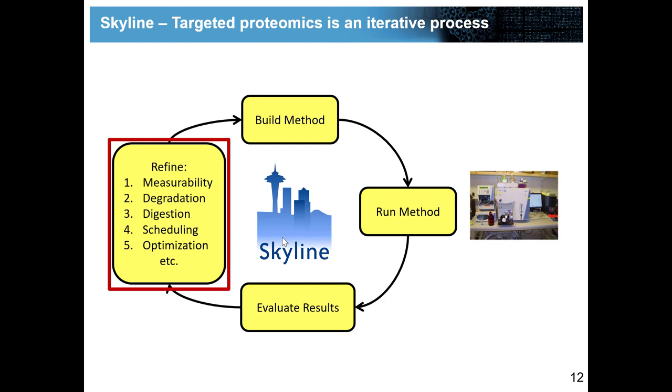Refining means you for example throw out peptides that you thought were detectable but are not, or they're degrading or not digested efficiently, or you first do a non-scheduled measurement and then start doing scheduling, or you optimize any other type of parameter like collision energy or declustering potential. Once you refine your parameters you will build a new method which you will run again, evaluate, and this cycle can happen a few times before you have a final method. The cool thing is that Skyline is exactly built to support you in all these steps.